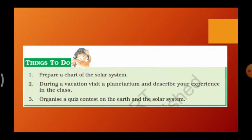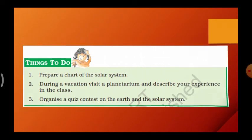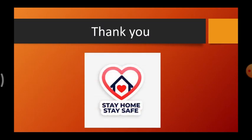Okay students, next is your activity — you have to do it by yourself. First, prepare a chart of the solar system. Make a creative chart — not the usual one. Show your creativity. It should be a unique solar system chart. Do this activity and send it in the group. The lesson is now over. Read everything. Hope you understood. We will meet in the next video. Thank you students, bye!